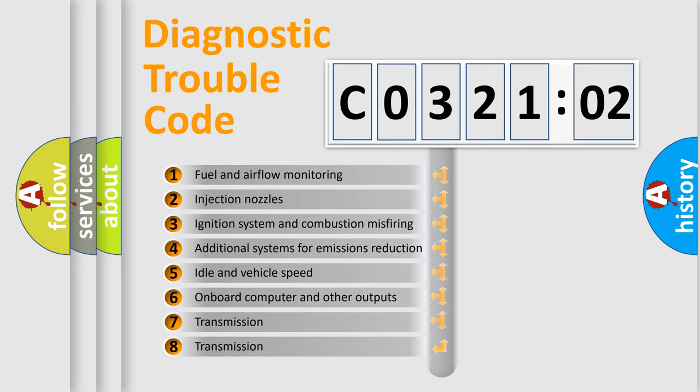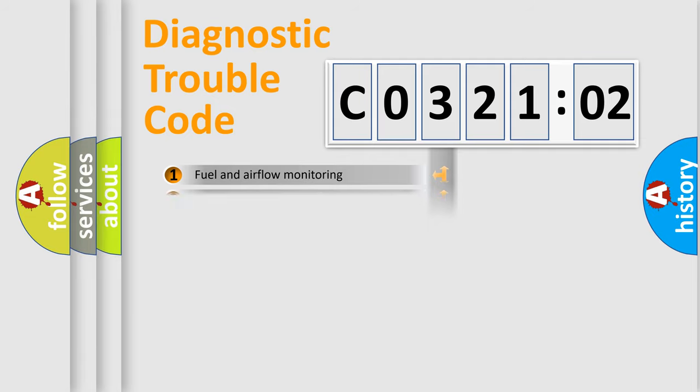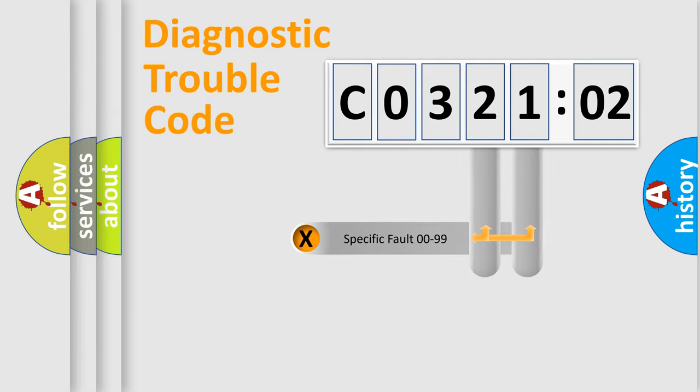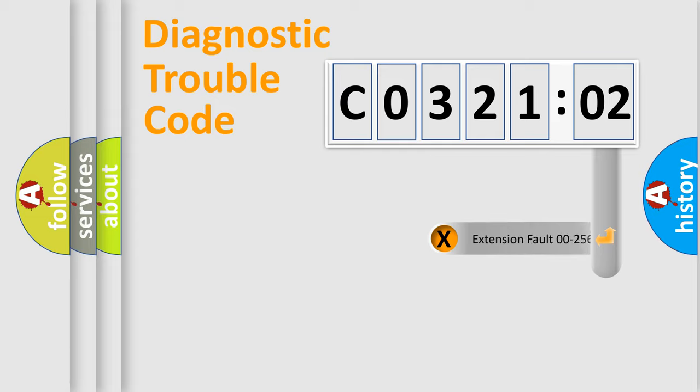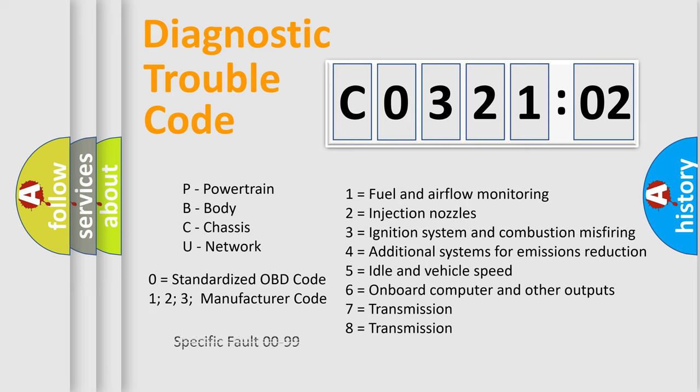The third character specifies a subset of errors. The distribution shown is valid only for the standardized DTC code. Only the last two characters define the specific fault of the group. The add-on to the error code serves to specify the status in more detail, for example, short to ground. Let's not forget that such a division is valid only if the other character code is expressed by the number zero.